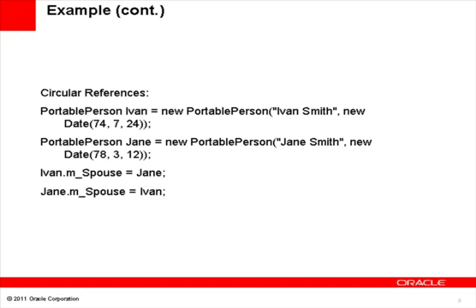We created two persons, Ivan and Jane. Ivan's spouse is Jane, and Jane's spouse is Ivan. This is an example of circular reference. When we serialize PortablePerson in PuffStream, Ivan's spouse would be Jane's object ID rather than the object itself.